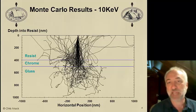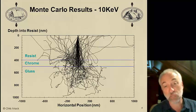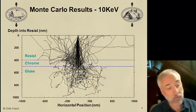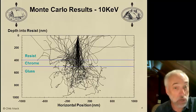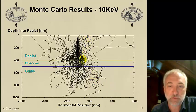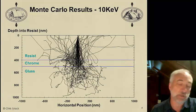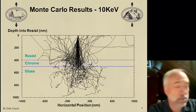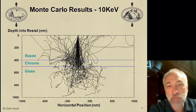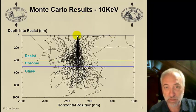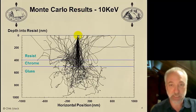We combine all of these mechanisms of scattering and put them in a model. Just like we did with ion implantation, we can develop a Monte Carlo model for e-beam lithography. I wrote such a model a couple of decades ago, and here are some results from that Monte Carlo simulator, showing a particular case of interest: 400 nanometers of photoresist on top of 100 nanometers of chrome on top of a glass substrate — the kind of film stack you would have for mask writing.